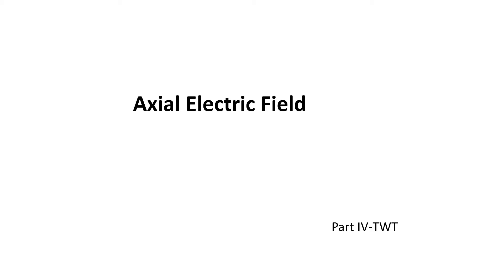In this section we are going to see the derivation of the axial electric field in the traveling wave tube. This is Part 4 of the traveling wave tube lecture series. In Part 1 we covered the working principle and operation; Part 2 covered the significance of slow wave structures and the amplification process; Part 3 covered the convection current; and now in Part 4 we learn about the axial electric field derivation.